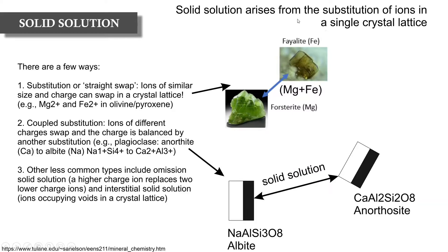Solid solution arises from substitution of ions in a single crystal lattice. The first type is straight substitution, where ions of similar size and charge swap for one another. Using olivine as an example, we have two end members: purely magnesium-rich olivine known as forsterite, and purely iron olivine known as fayalite. These two phases form a solid solution, meaning we can have a mixture of both magnesium and iron in an olivine anywhere between these two end members.